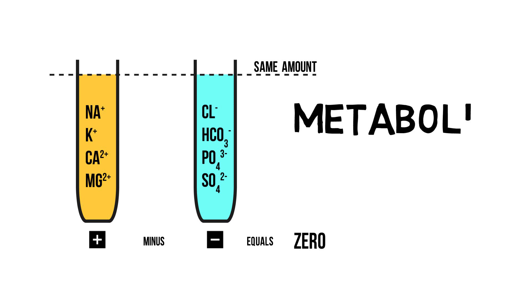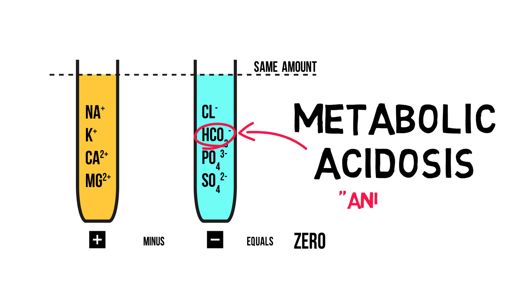Metabolic acidosis occurs when there is a decrease in the anion bicarbonate, either through loss or because it has functioned as a buffer when even more acids are produced. The anion gap, more on that later, helps us in figuring this out.